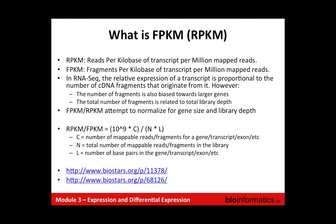RPKM and FPKM have a fairly simple formula: you take the number of mapped reads or fragments for a gene, transcript, exon, or whatever feature you're calculating, and divide by the total number of mappable reads in the library and the number of base pairs in that feature. The K and M come from multiplying by a thousand and a million so the numbers work out nicer. If you just divided by total library size and gene size you'd end up with weird fractional numbers, so everything is made relative to a hypothetical 1,000 base pair gene and 1 million read library — hence multiplying by 10 to the 9.